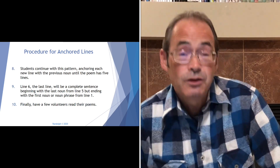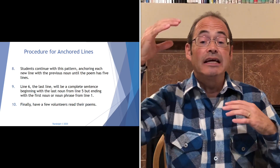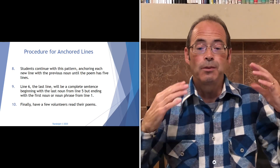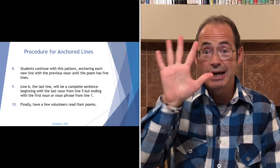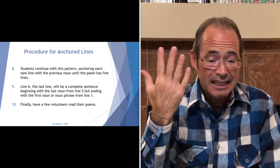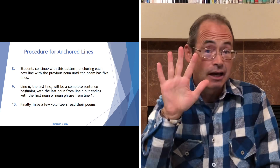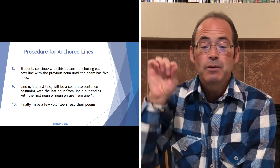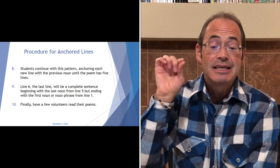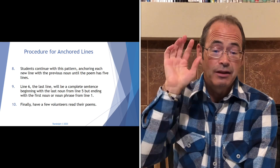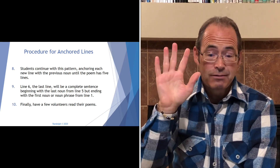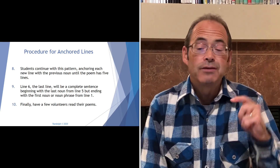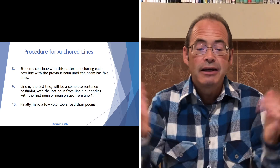Next, students continue with this pattern, anchoring each new line with the previous noun until the poem has five lines. Line six — the last line — will be a complete sentence beginning with the last noun from line five, but ending with the first noun or noun phrase from line one. Finally, have a few volunteers read their poems.